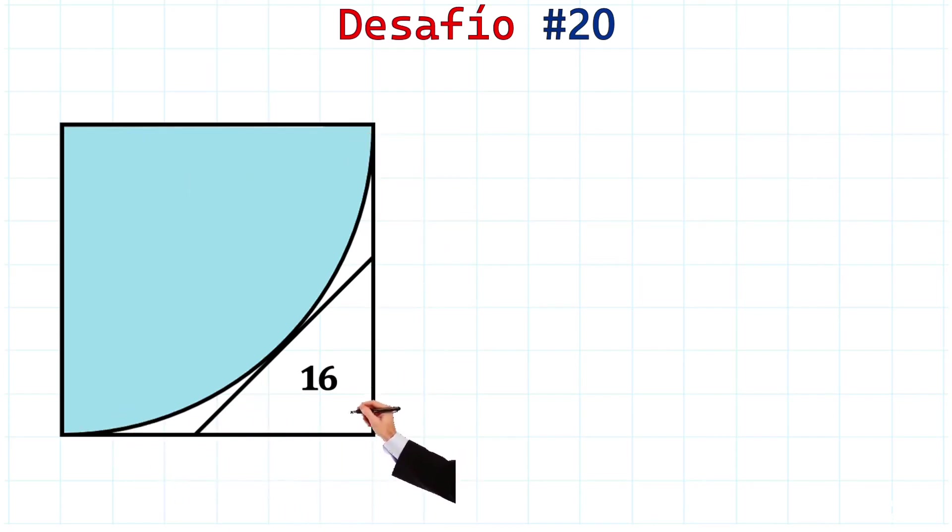Remember here we have 90 degrees because it's the square's angle. So that means this angle and this angle are equal because it's an isosceles triangle. So each angle here is 45 degrees, 45 here, and 45 here. Remember, the area of the triangle was 16. I'm going to erase this now.